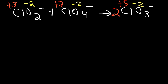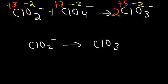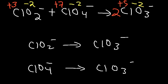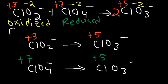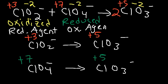There are two ClO3− ions on the right side: one chlorite ion turns into chlorate, and one perchlorate ion also turns into chlorate. For the chlorine in ClO2−, it went from +3 to +5 — the oxidation number went up, so it lost two electrons and was oxidized. For the chlorine in ClO4−, it went from +7 to +5 — it gained two electrons and was reduced. Therefore, the chlorite ion is the reducing agent and the perchlorate ion is the oxidizing agent.